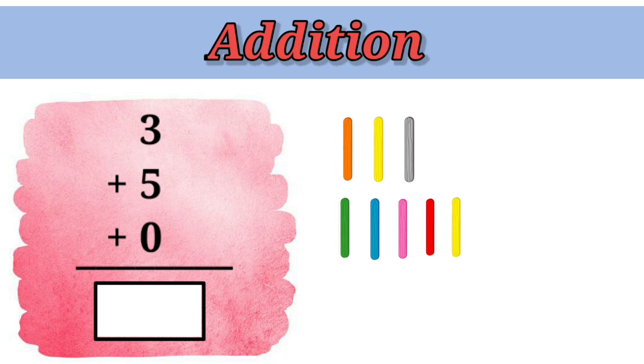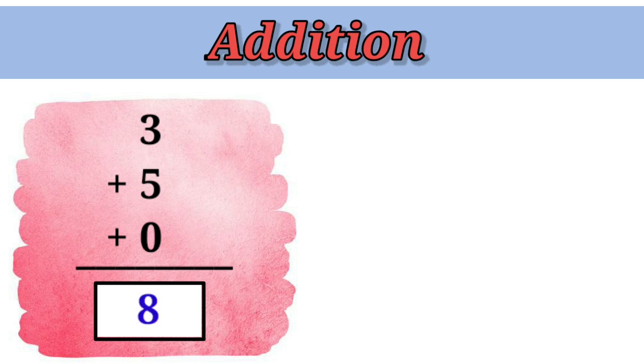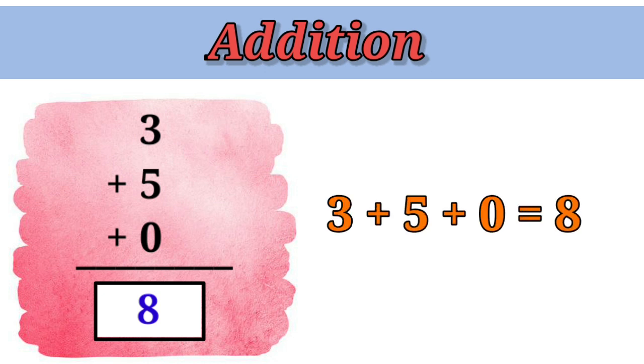Now, let's count all together. 1, 2, 3, 4, 5, 6, 7, 8. So, all together we have 8. Therefore, 3 plus 5 plus 0 is 8.